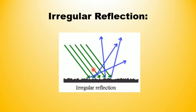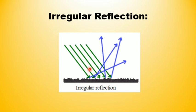When parallel rays of light strike on a rough surface, they are reflected back in different directions and do not remain parallel to each other. Such type of reflection is called irregular reflection. Beta, jab parallel rays of light kisi bhi rough surface par padti hain, to wo different direction mein reflect hoti hain aur wo parallel bhi nahi rehti hain — is tarah ki reflection ko irregular reflection kehte hain.